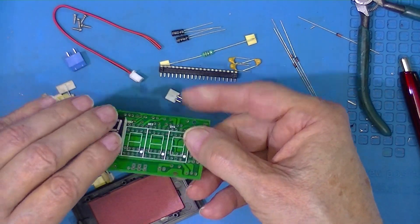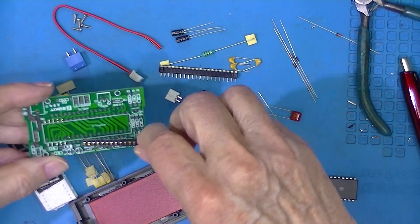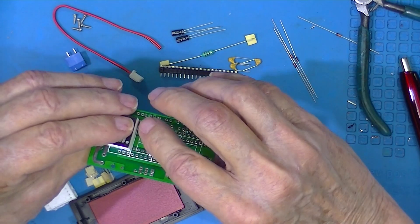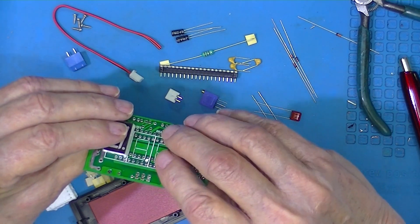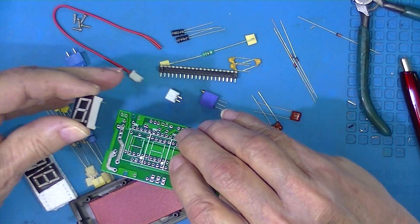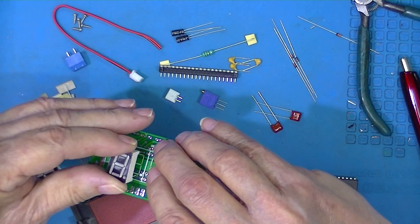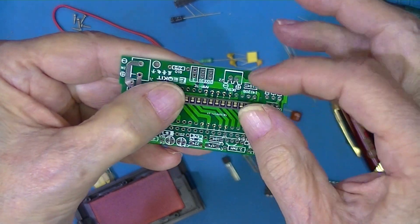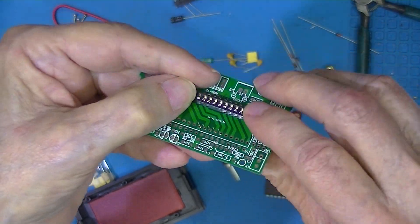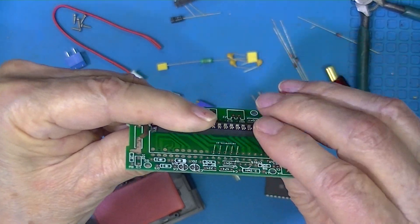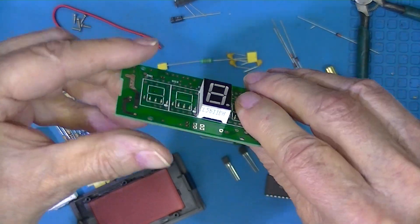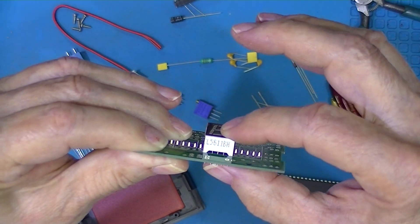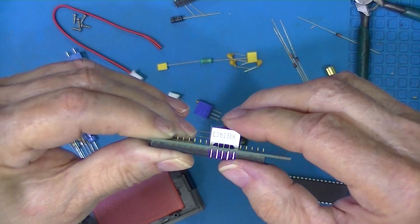Now I can install this socket and solder all the pins on that side. Once I installed this half of the socket I can solder these and these, having already soldered these.